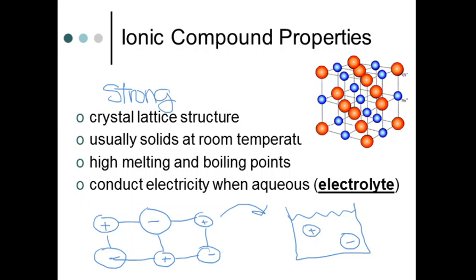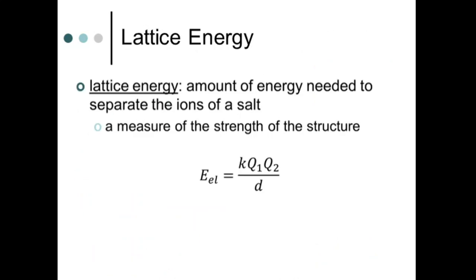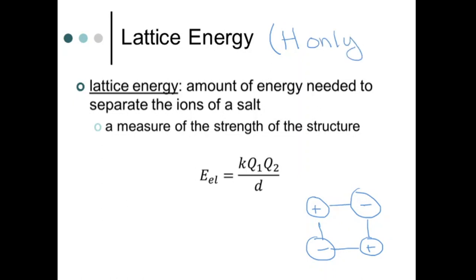The last property to discuss is lattice energy — the amount of energy needed to separate the ions of a salt. If you want to take that crystal lattice structure and separate it into its component parts, the amount of energy you need to add to pull apart the positive and the negative is what we call lattice energy. It is a measure of the strength of the structure. Students in the CP class do not need to work with this equation — this is an honors-only addition.